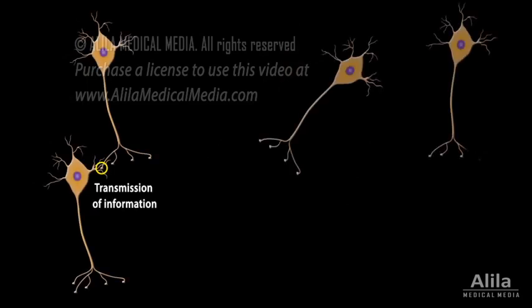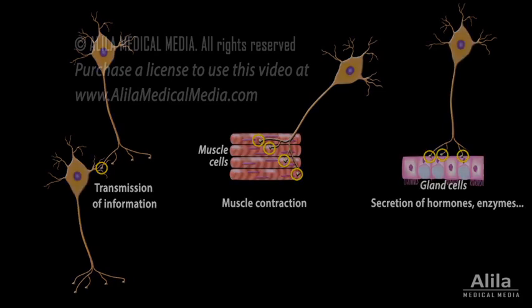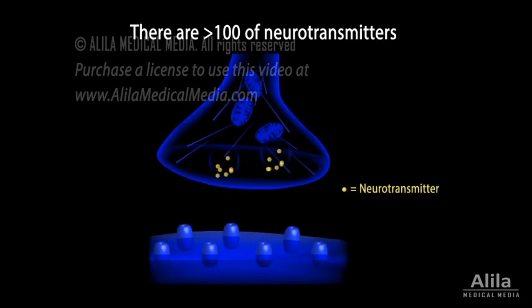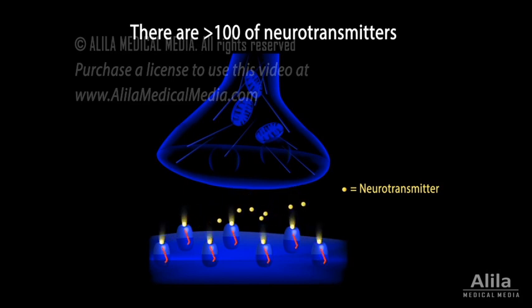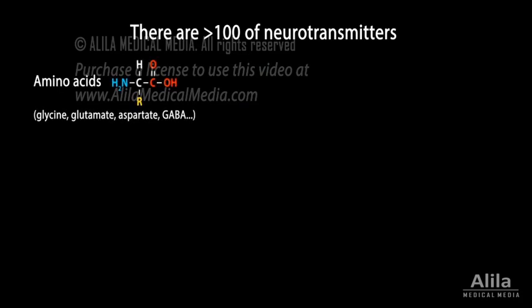Chemical synapses exist not only between neurons, but also between a neuron and a target cell, such as a muscle or gland cell. Over a hundred neurotransmitters have been identified so far. Most of them can be grouped into classes according to their chemical structure. Major classes include amino acids, such as glycine, glutamate, aspartate, and GABA.